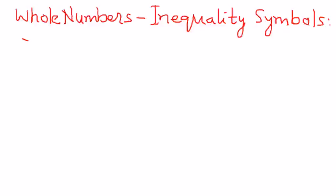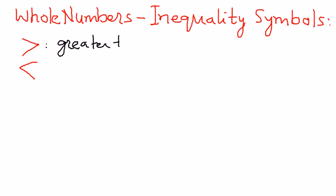We have two symbols. When we have a symbol pointing towards the right, it means greater than. That means a symbol opening to the right means greater than.